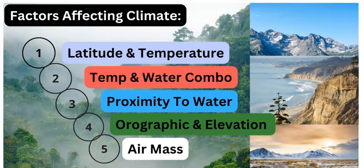Climate is complex and is controlled or affected by various factors. These factors can vary in number, but I have condensed it into five that I feel we can really discuss. These five are: latitude and temperature, the combination of water and temperature, proximity to water (a lake or ocean), elevation and the orographic effect, and the air mass where the air is coming from and its properties or characteristics.